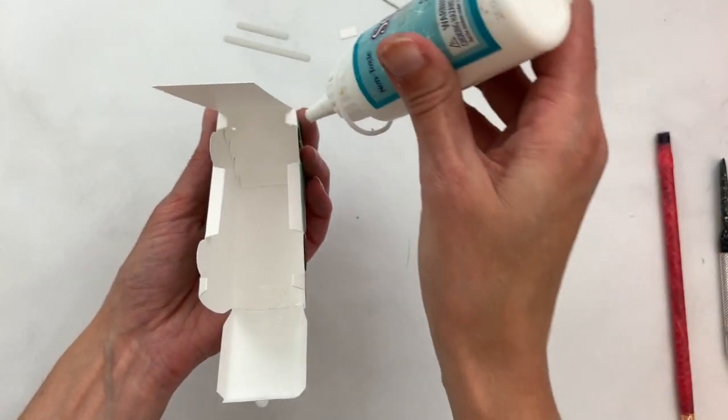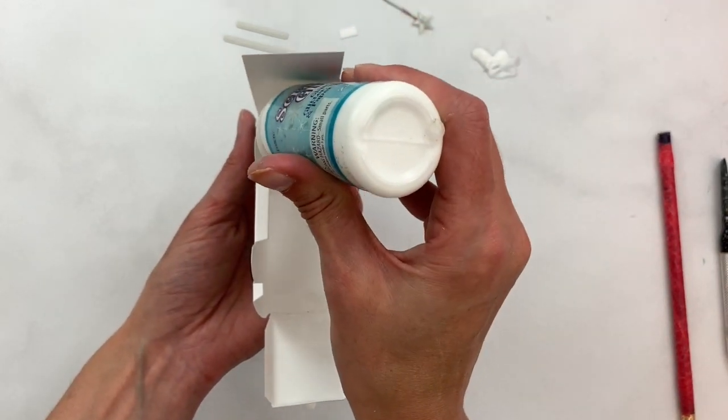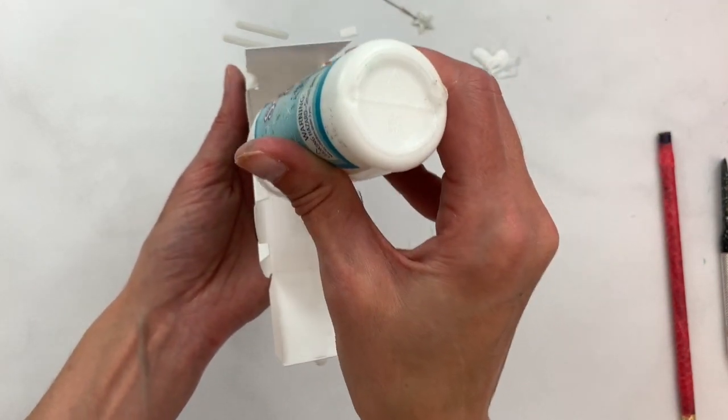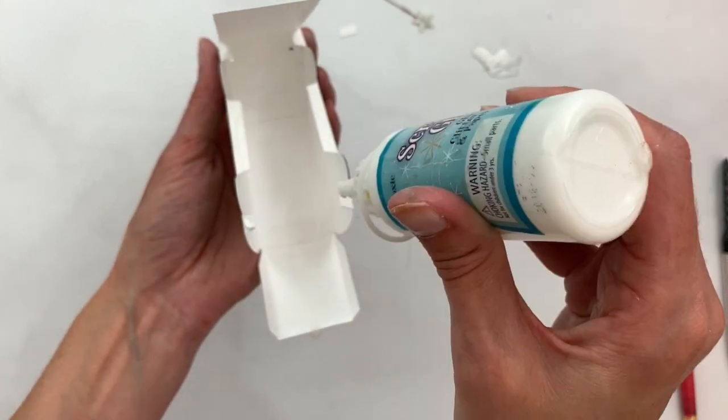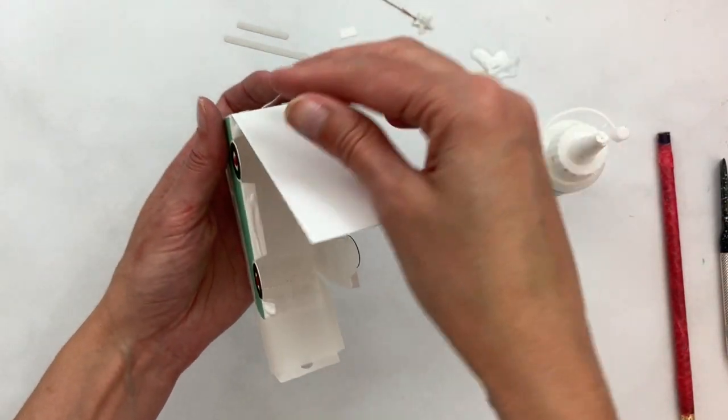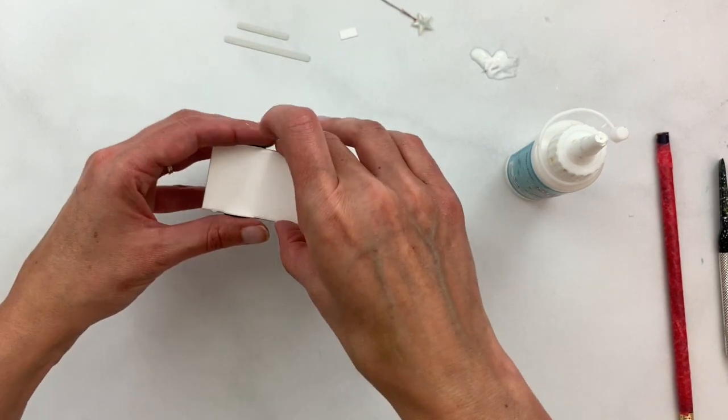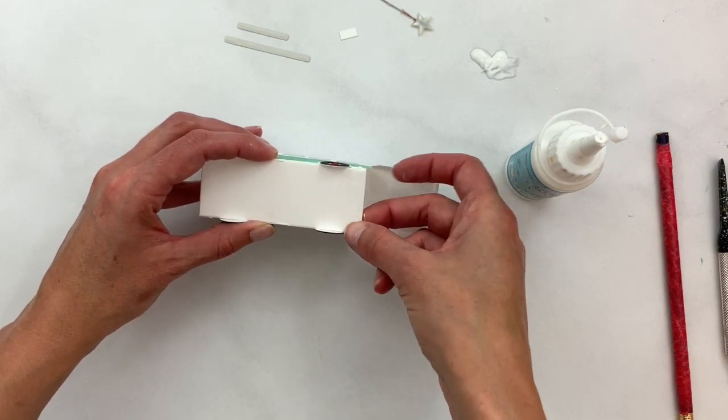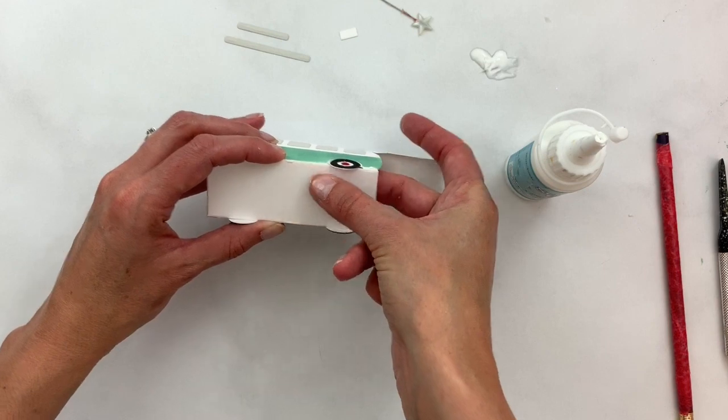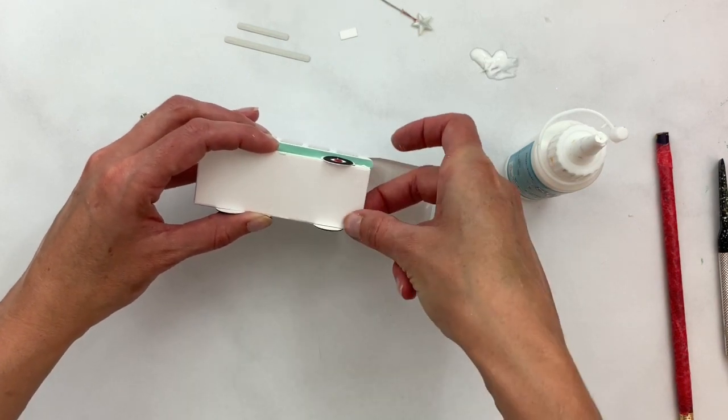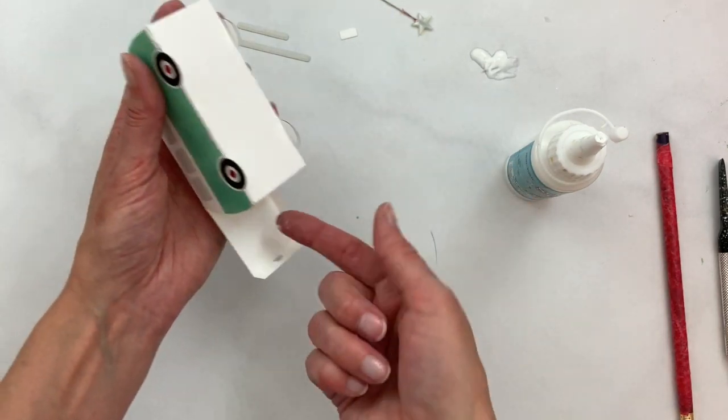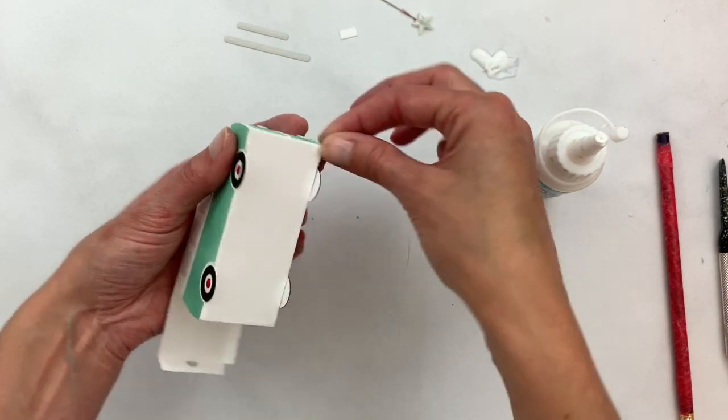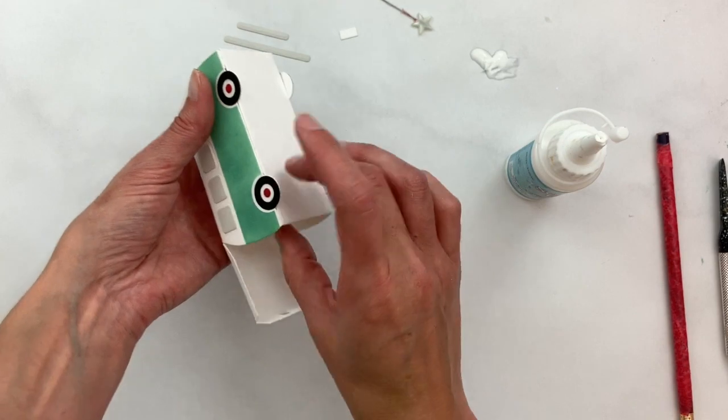All right, so then you can go ahead and add glue to these bottom tabs. There's two little tabs up in the front and a longer tab between the two wheels and then a tiny tab at the back. And then just go ahead and close that bottom up. Squeeze them to get that glue to set. These front tabs are too small to reach inside of there, so I like to just give this front corner, these two front corners, just a little pinch to secure that tab up in the front.